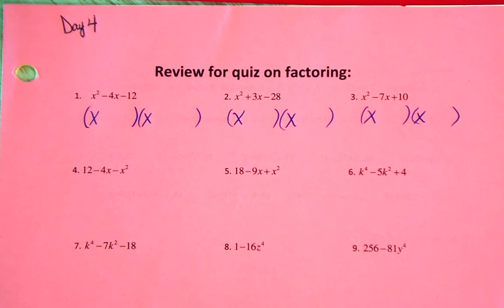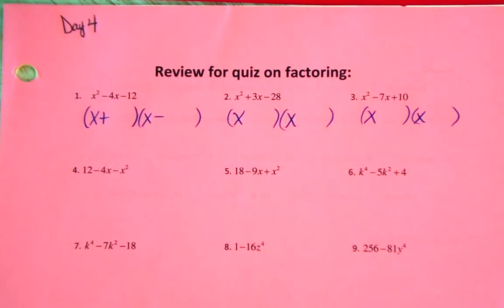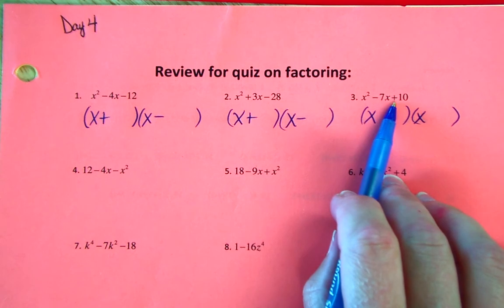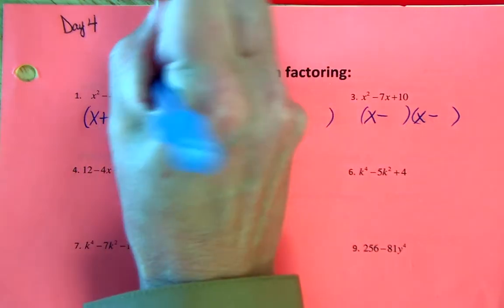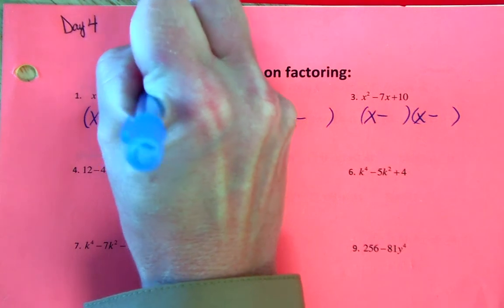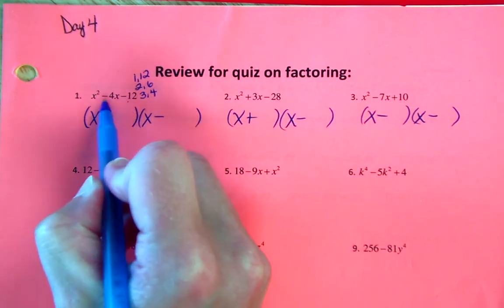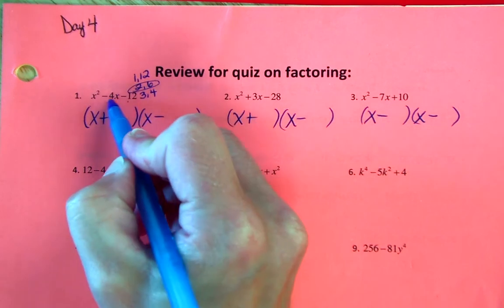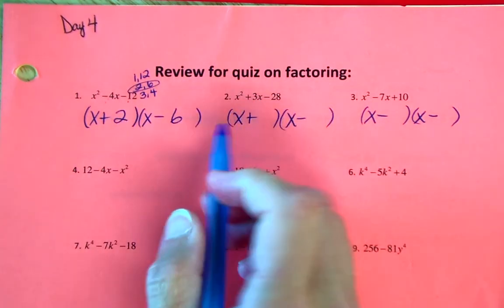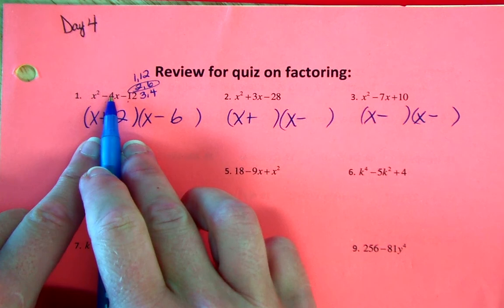They all start with x squared. Now if we look at the signs — they multiply to a negative, so I know my signs are going to be different. Put down some work so you can get partial credit. When the last term is a positive number, the signs are the same; we look to the middle, and they're both going to be negative. Looking at the factors of 12: 1×12, 2×6, and 3×4. I need two numbers that multiply to negative 12 and add to negative 4 — that's 2 and 6. The larger number goes with the sign in the middle, so 6 is negative and 2 is positive.